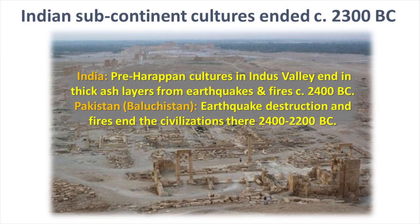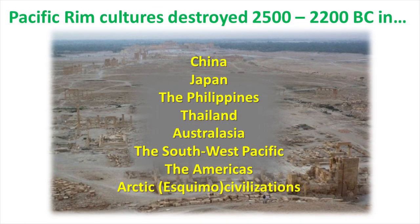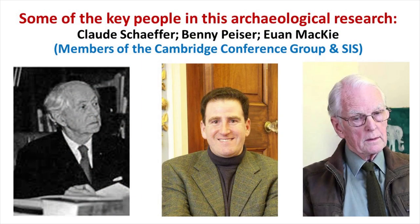On the Indian subcontinent, significant cultures were wiped out about 2300 BC. In both India and Pakistan, earthquakes and fires with thick ash layers ended these civilizations, including the pre-Harappan cultures in the Indus Valley. A large number of cultures around the Pacific Rim were also destroyed during 2500 to 2200 BC, including societies in China, Japan, the Philippines, Thailand, Australasia, the Southwest Pacific, the Americas, and the Esquimos in the Arctic. Key people in this archaeological research included Professor Claude Schaefer, Dr. Benny Pizer, Dr. Ewan Mackay, and other members of the Cambridge Conference Group and the Society for Interdisciplinary Studies.